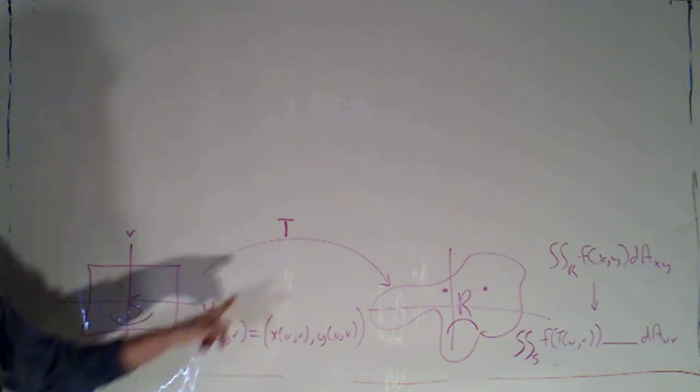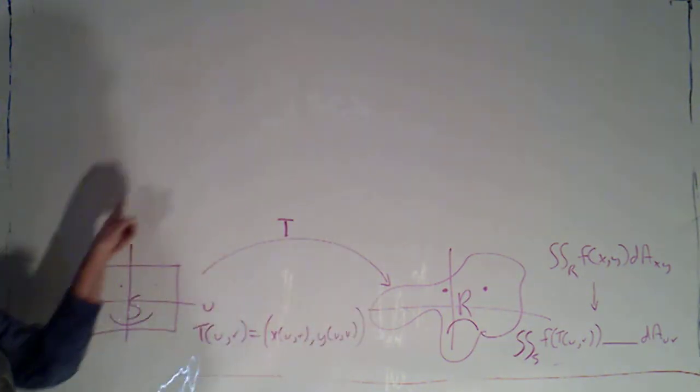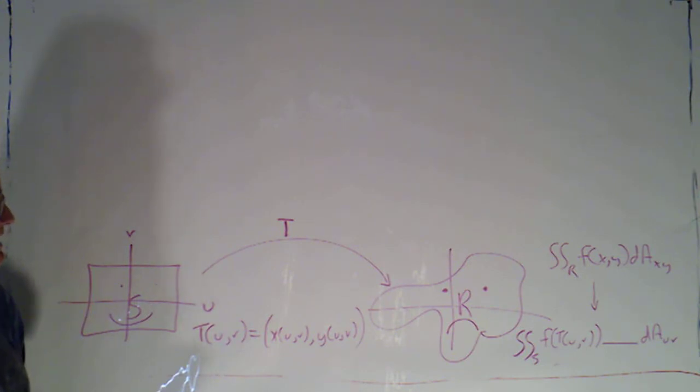Okay, we put some restrictions on T. We said it's going to have to be one to one. In particular, that's going to ensure that there's an inverse, because we're really trying to work backwards here. And it's going to have to have continuous first partial.